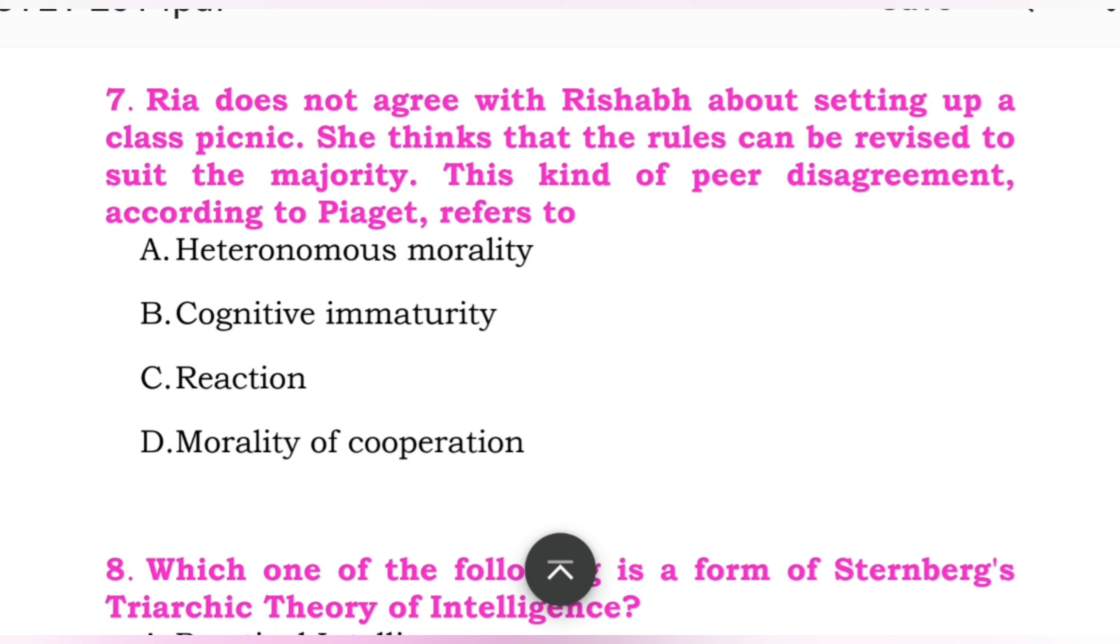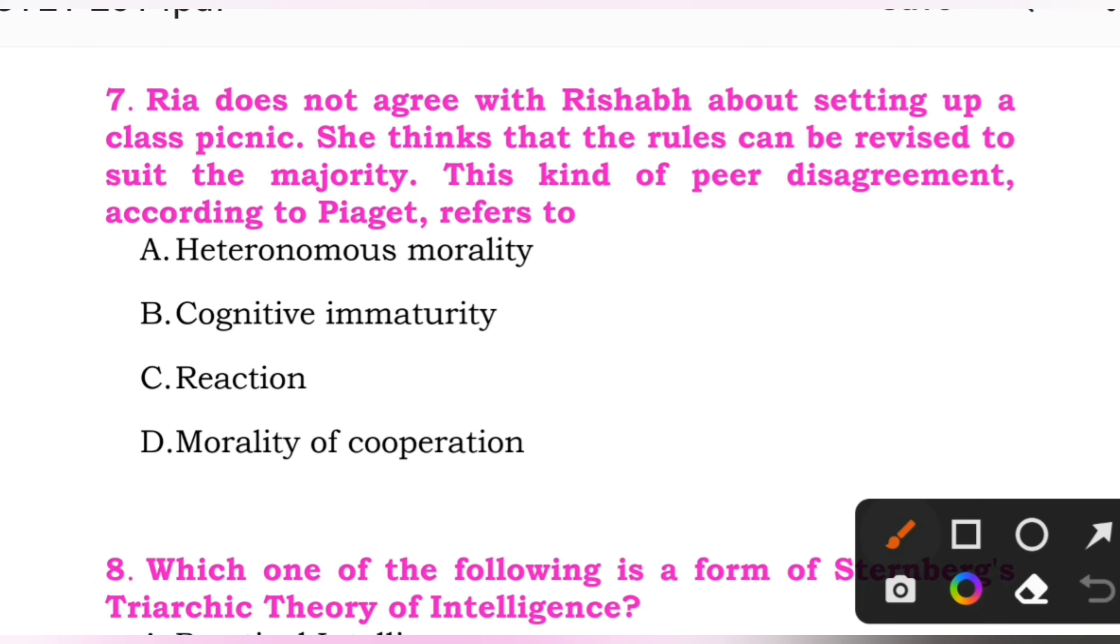Question number seven: Raya does not agree with Rishabh about setting up a class picnic. She thinks that the rules can be revised to suit the majority. This kind of peer disagreement according to Piaget refers to. Options: A: heteronomous morality. B: cognitive immaturity. C: reaction. D: morality of cooperation. Here the right answer is D, morality of cooperation.